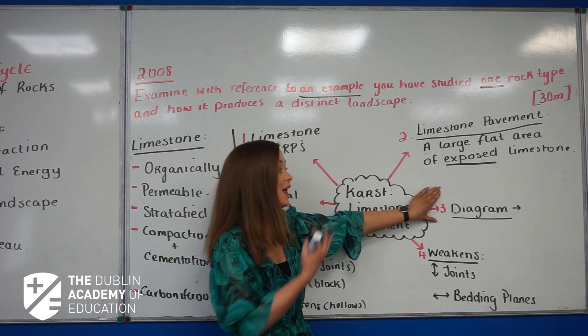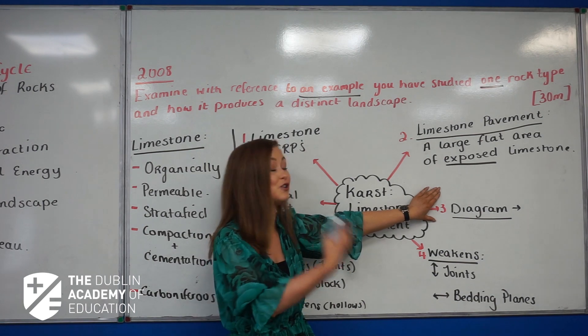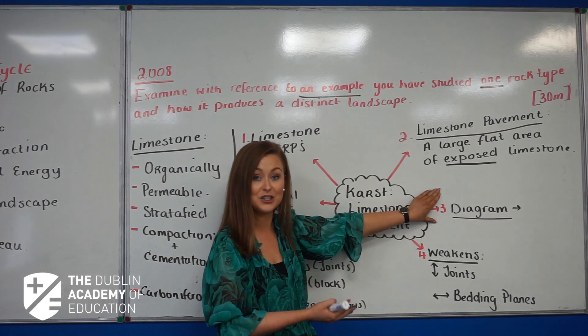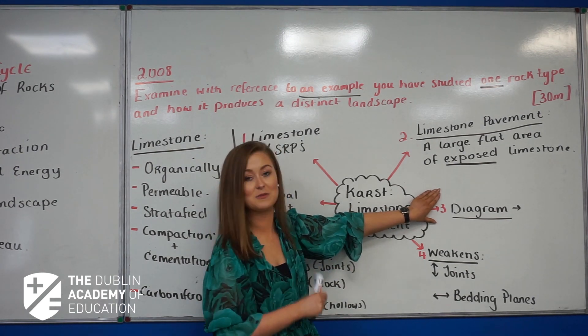What we're going to talk about—and we're actually going to discuss it with our diagram—is a limestone pavement and how it's actually formed. It's formed through the process of the chemical weathering process of carbonation, and we're going to pop over to the diagram to have a look at it.